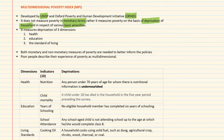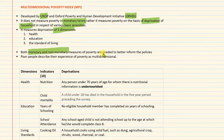Therefore, poverty should be measured not in monetary terms but in terms of deprivations of various basic amenities such as health, education, standard of living, etc. MPI measures deprivation of three dimensions: health, education, and standard of living. Both monetary and non-monetary measures of poverty are needed to better inform policies, because the monetary aspect of poverty does not capture poverty and issues arising out of it in totality.